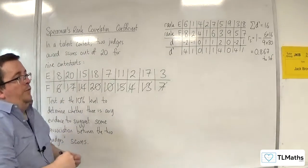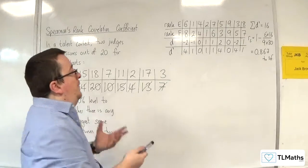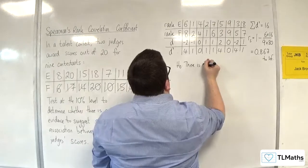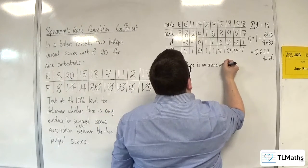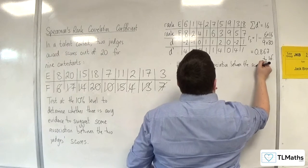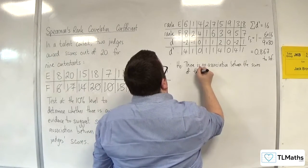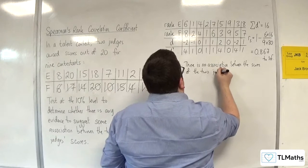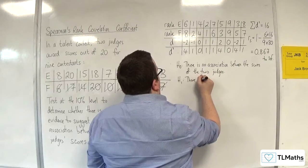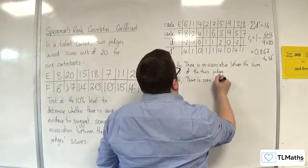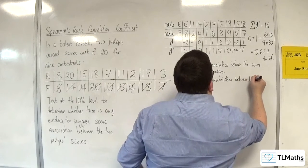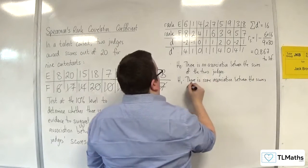Now we go into the hypothesis test. H0: there is no association between the scores of the two judges. H1: there is some association between the scores of the two judges.